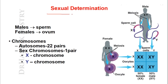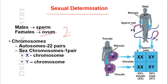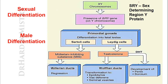First, sexual determination: how males and females are produced. The male germ cell (sperm) and female germ cell (ovum) both have 23 chromosomes. Out of 23 chromosomes, 22 are autosomes and one pair are sex chromosomes. This one pair of sex chromosomes includes an X chromosome and a Y chromosome in males, and two X chromosomes in females.